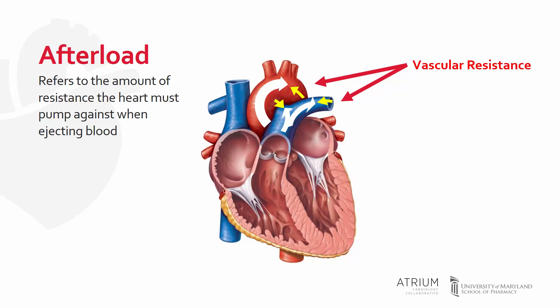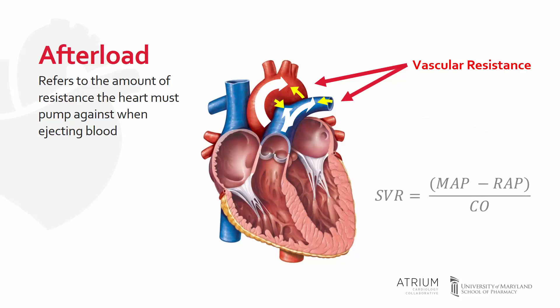Resistance is determined by measuring the difference in pressure, shown here as delta P, divided by blood flow. In cardiovascular hemodynamics, we're concerned about the difference in pressure between the arterial and venous systems divided by blood flow. In more practical terms, the systemic vascular resistance, or SVR,